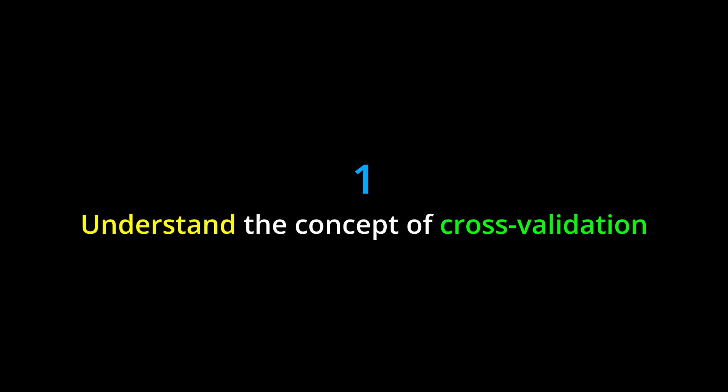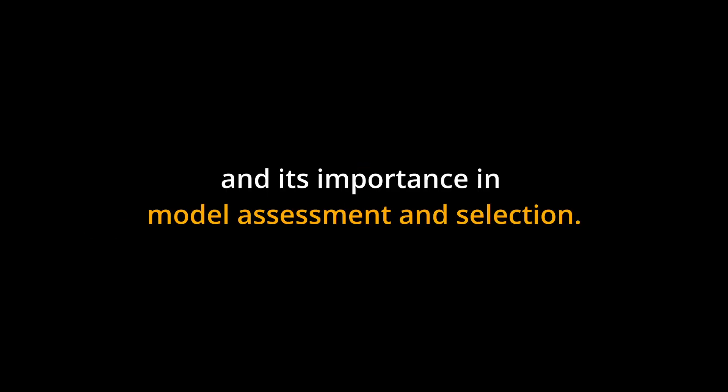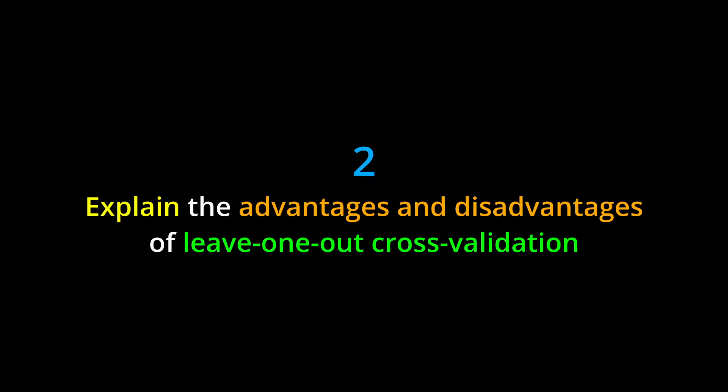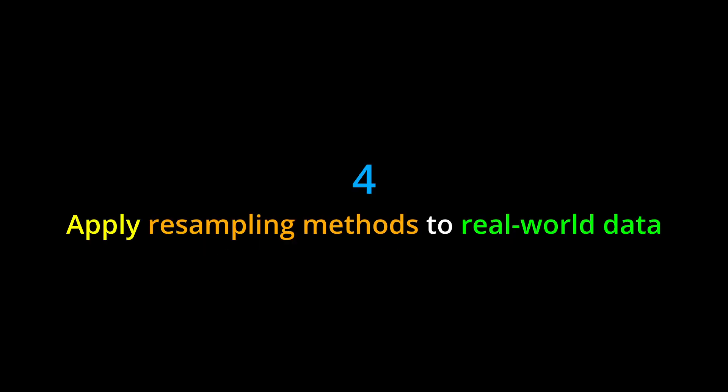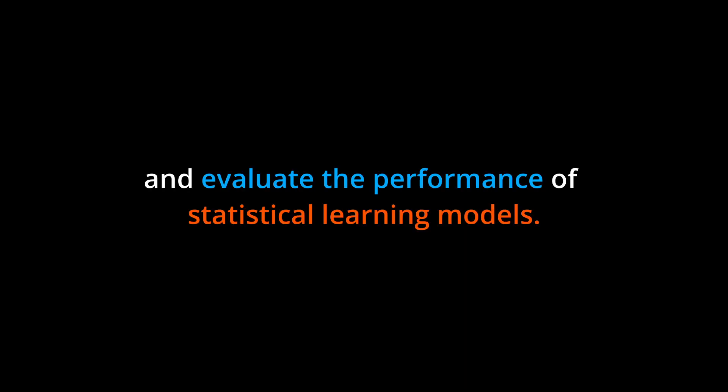Learning objectives: by the end of this chapter you should be able to: one, understand the concept of cross-validation and its importance in model assessment and selection; two, explain the advantages and disadvantages of leave-one-out cross-validation compared to other resampling methods; three, perform k-fold cross-validation and interpret the results.